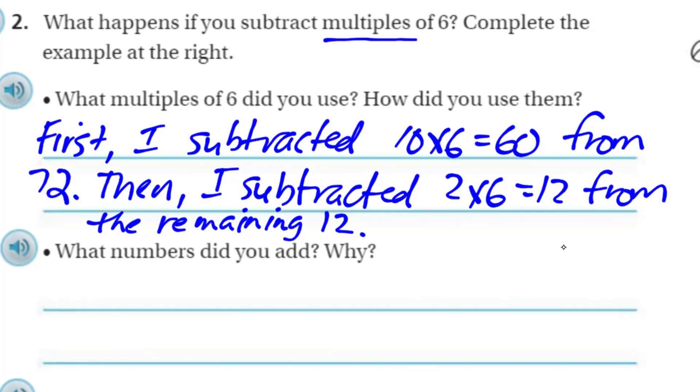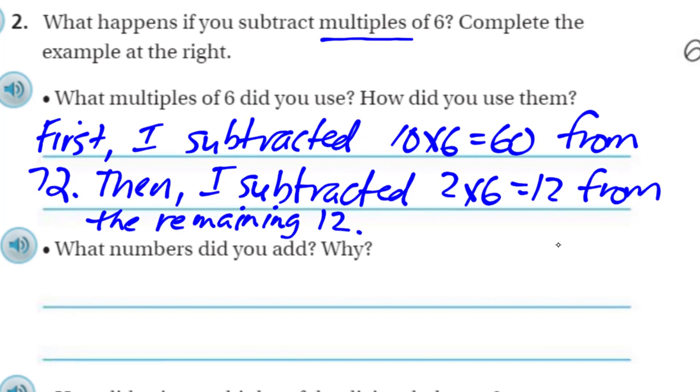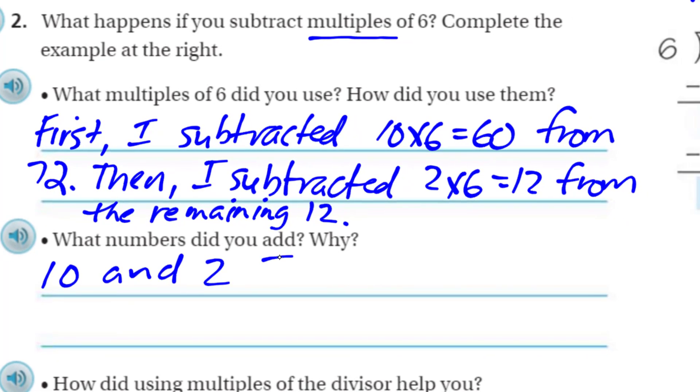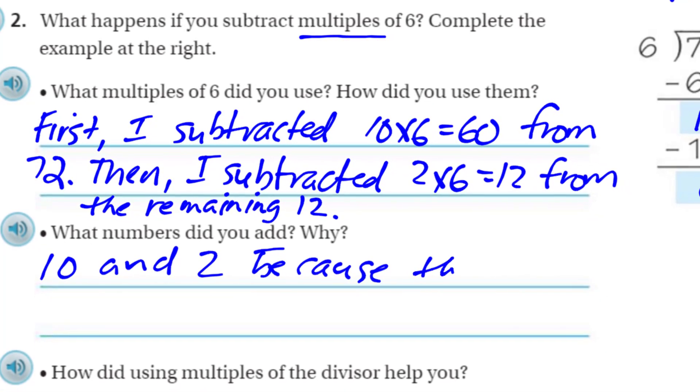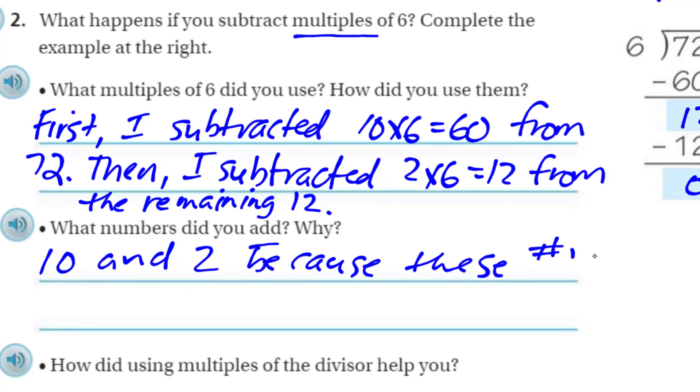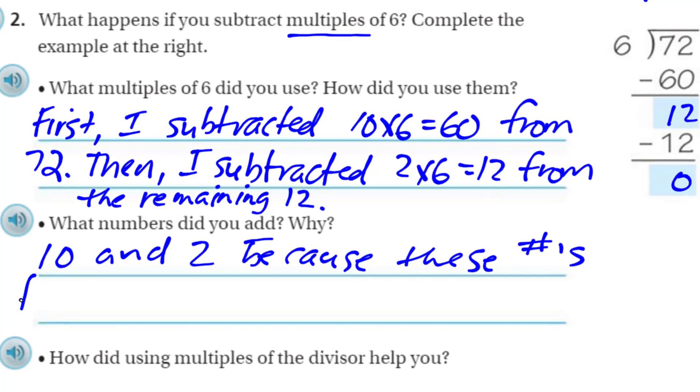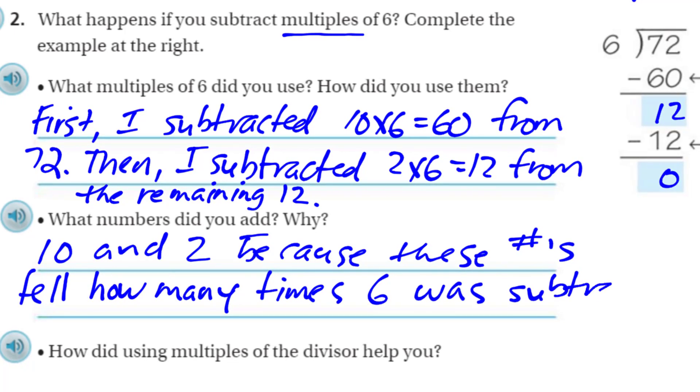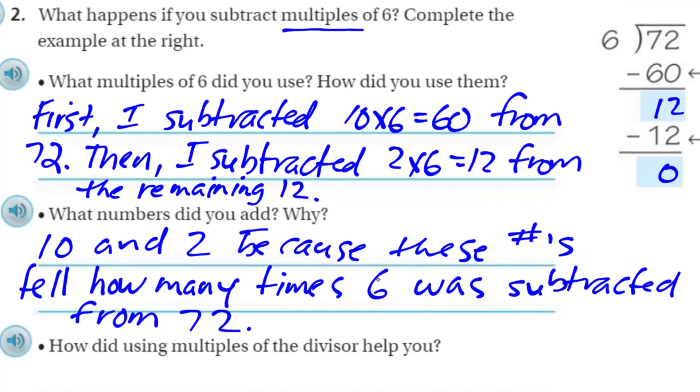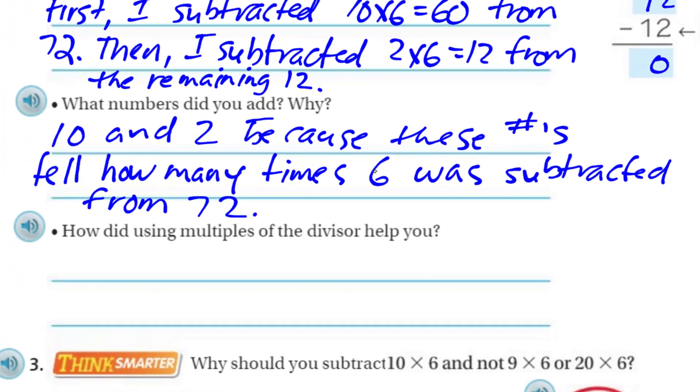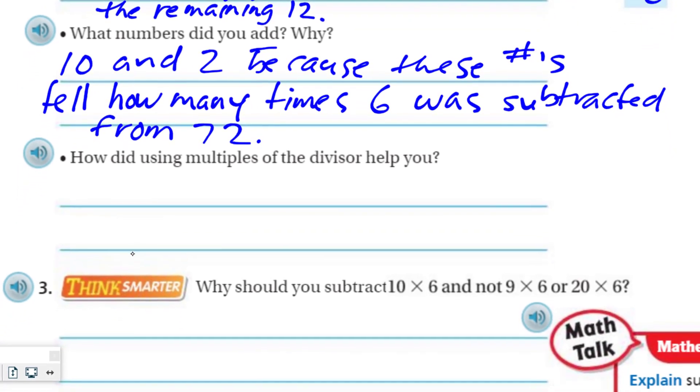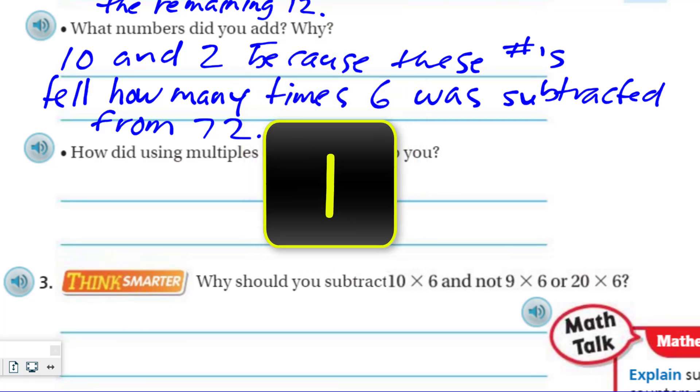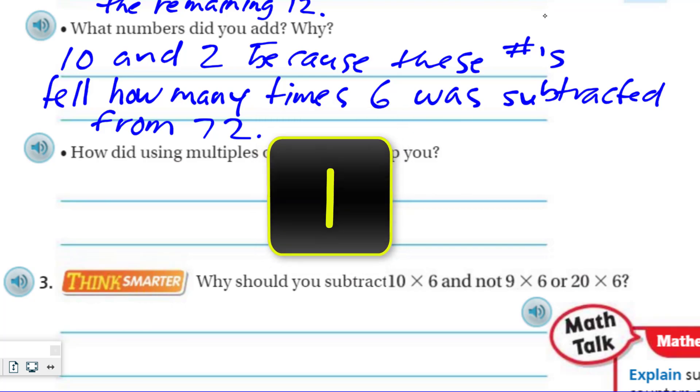What numbers did you add? Why? We added how many times? So we added the ten times, and then we added the two times. We used ten and two. Those are the ones that we added. Ten and two. Because these numbers tell how many times six was subtracted from 72. Now, it says, how did using multiples of the divisor help you? I would say, taking multiples, they're larger. Like, here we took that multiple of ten. That made those ten groups of the six, and subtracting those right away, made it faster.